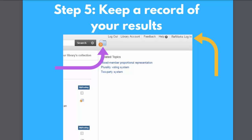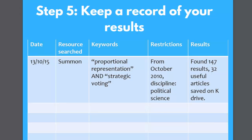Another good way to save your search results is to set yourself up with a RefWorks account by clicking on the RefWorks link at the top right hand corner of the Summon results page. To keep track of all searches you've done on Summon and other databases, a search diary involving a simple table in Word will do the job. It's a good idea to record the date you did searches, which resource you searched, search terms you used, any restrictions you applied, and some information about the results achieved and where they're saved. Keeping this search diary up to date will enable you to ensure that you've been systematic in your searching and to spot any gaps in your search strategy.